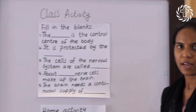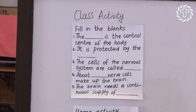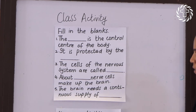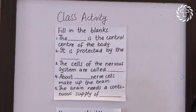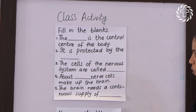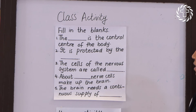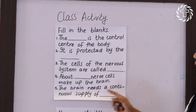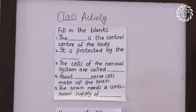Fill in the blanks: The brain is the control center of the body. It is protected by the skull. The cells of the nervous system are called neurons or nerve cells. About hundred billion nerve cells make up the brain. The brain needs a continuous supply of oxygen.